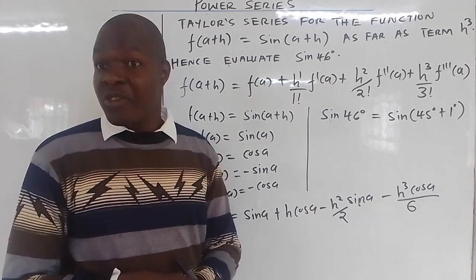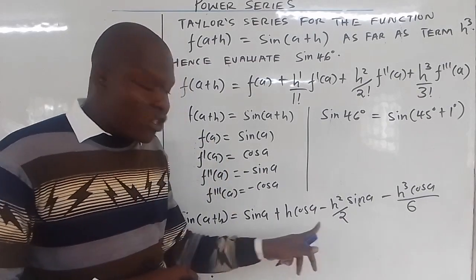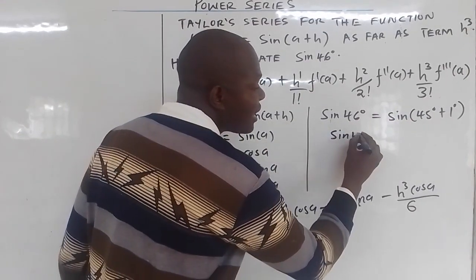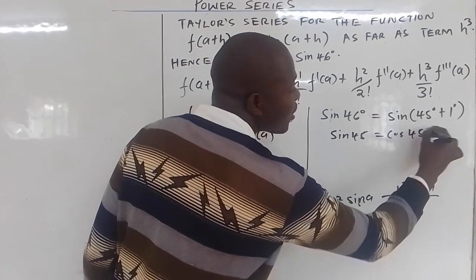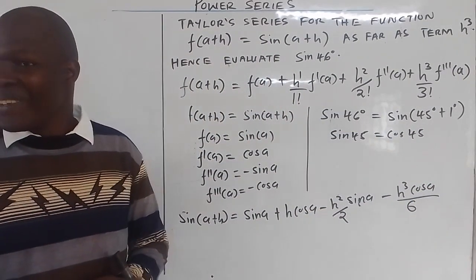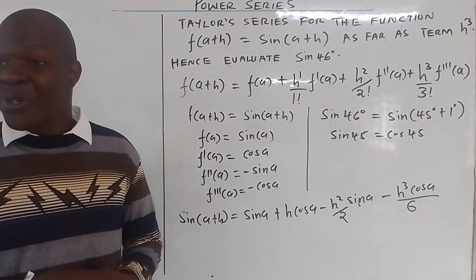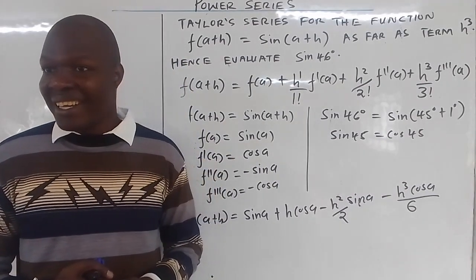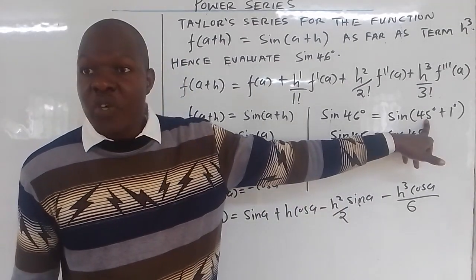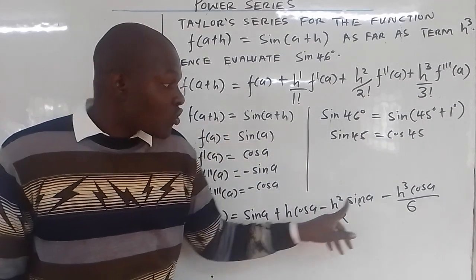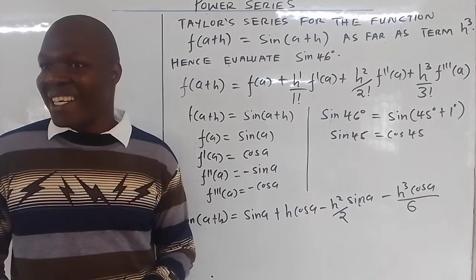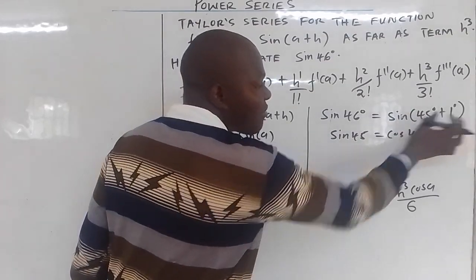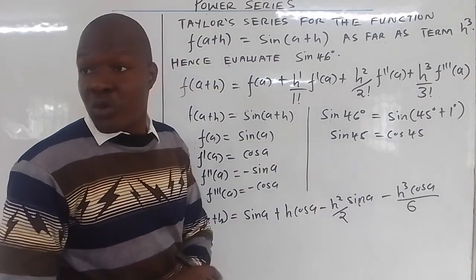It is easier to use sin(45°) because in this expansion we have sin(a) and cos(a). At 45°, sin(45°) is always equal to cos(45°) because of the co-function identity — when the sum of two angles equals 90°. So sin(46°) = sin(45° + 1°) because sin(45°) equals cos(45°).